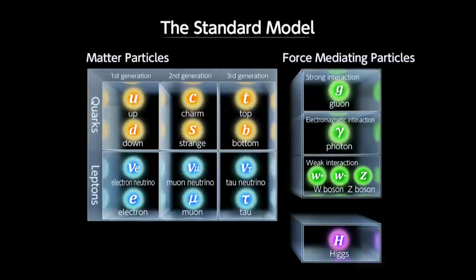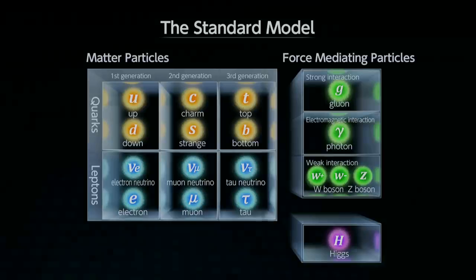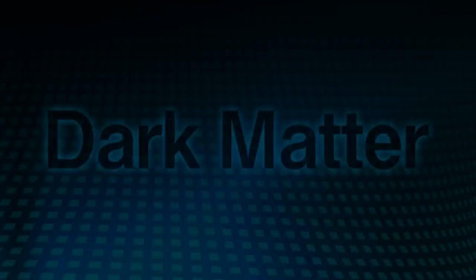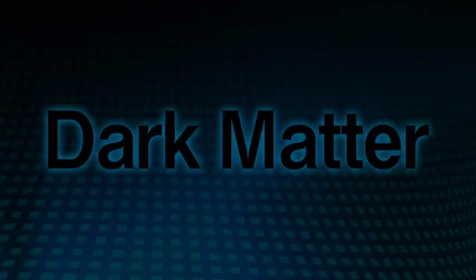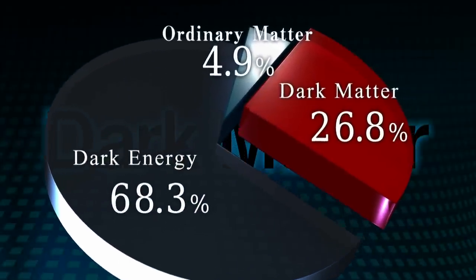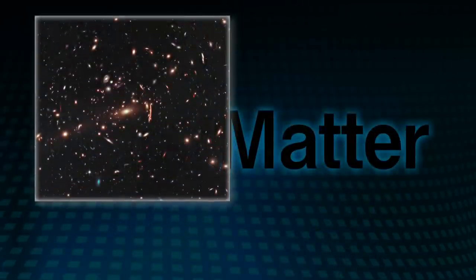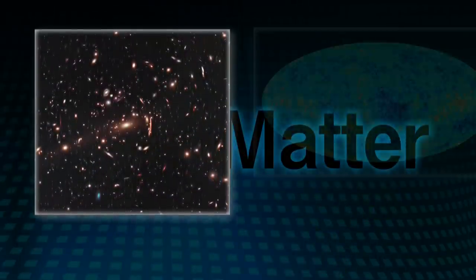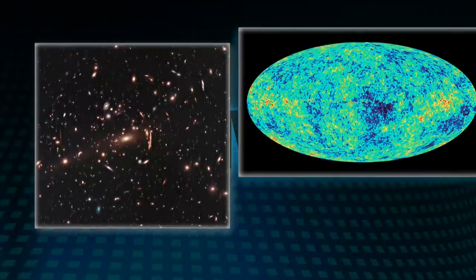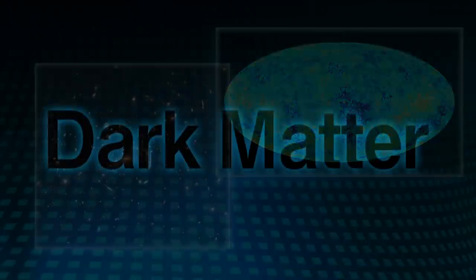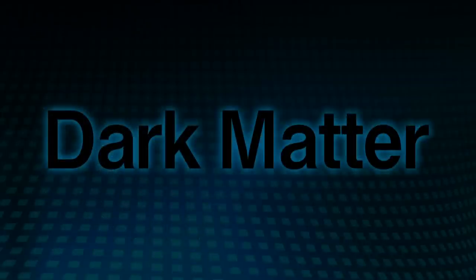The Standard Model is a well-established theory that very accurately describes the behavior of elementary particles. Even so, there are still many mysteries that cannot be explained by the Standard Model. One of those mysteries is dark matter. We know that 30% of the universe is made of dark matter from our observations of gravitational lensing and cosmic background radiation. However, we do not know what dark matter actually is.